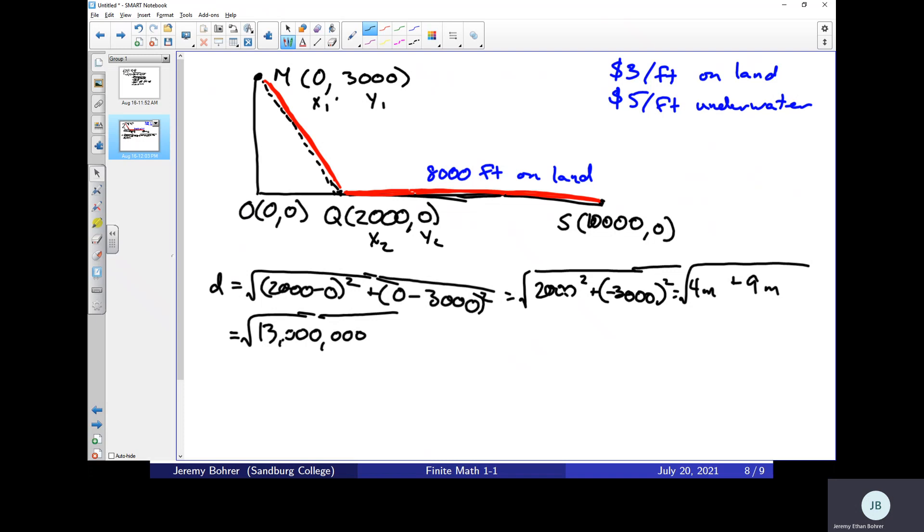Okay, well, we want to take the square root of that. That's the same as the square root of 13 times 1,000,000. And 1,000,000 is a square number, so that's handy. Okay, so that's 1,000 times the square root of 13.